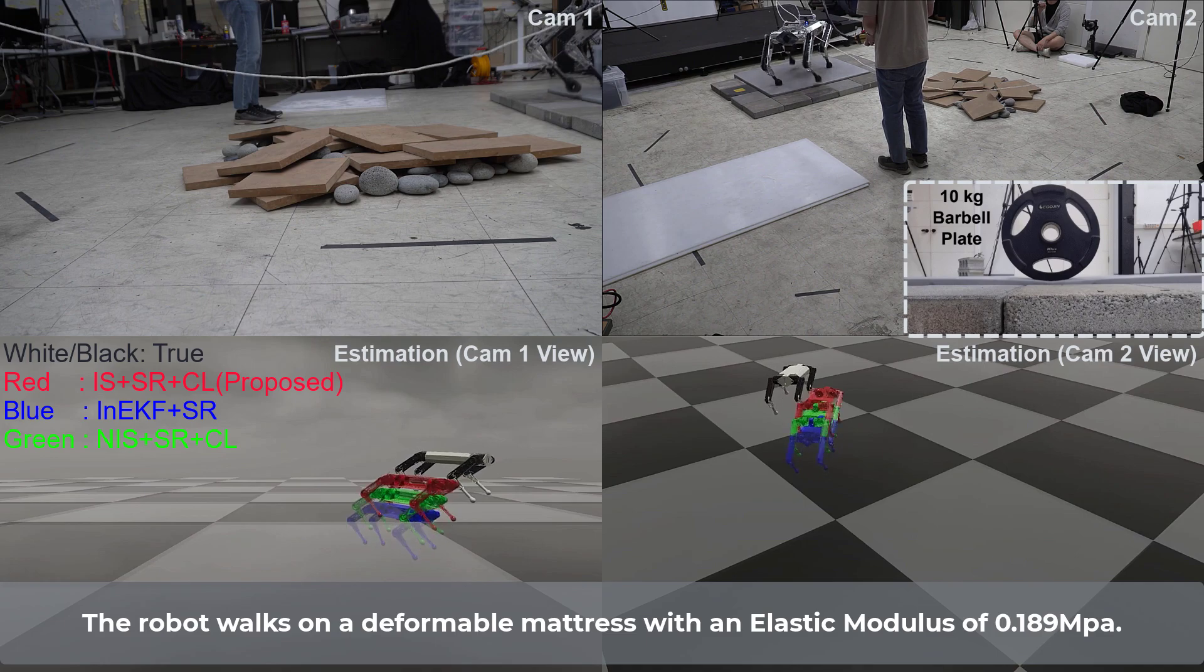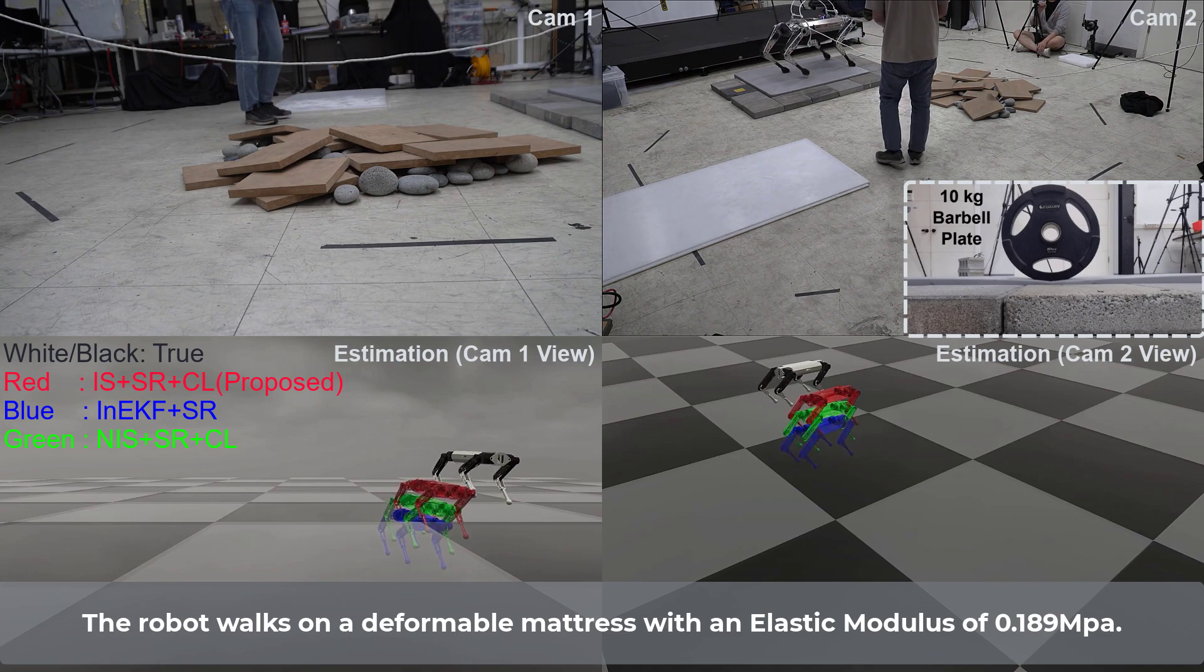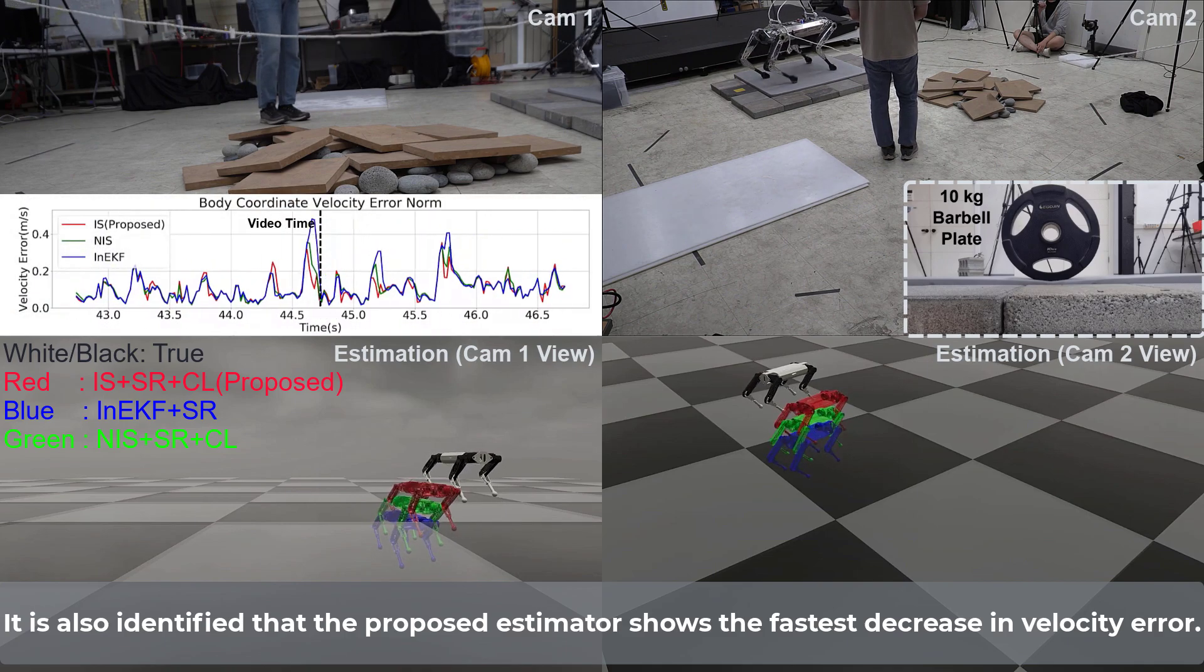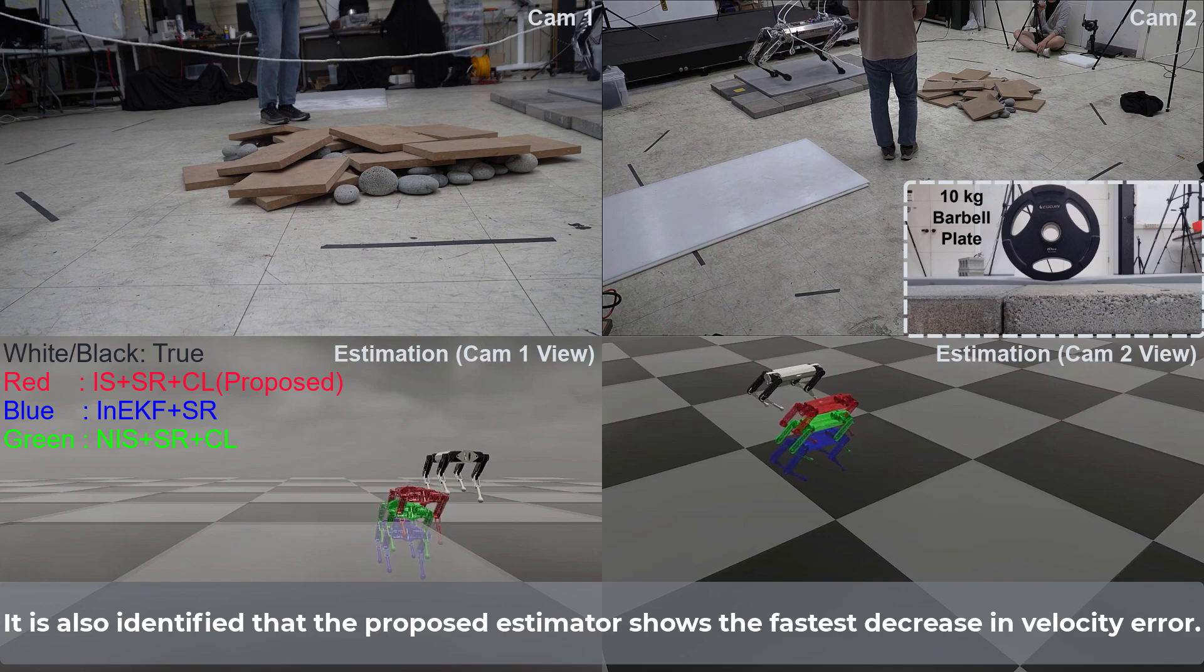The robot walks on a deformable mattress with an elastic modulus of 0.189 MPa. It is also identified that the proposed estimator shows the fastest decrease in velocity error.